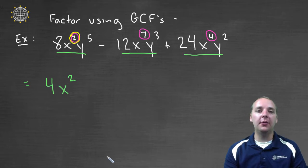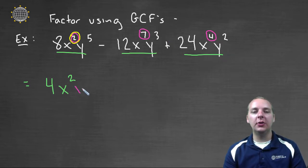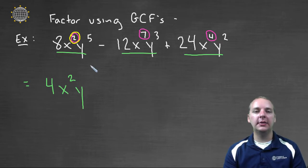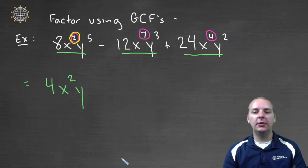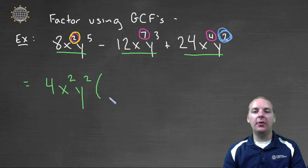We do the same thing for the y's. We have y to the fifth in the first term, y to the third, and y to the second. All three have a y, so there's at least a y in the GCF. We have five y's, three y's, and two y's — I'll choose the one with the smallest exponent, so I'll factor out y squared.